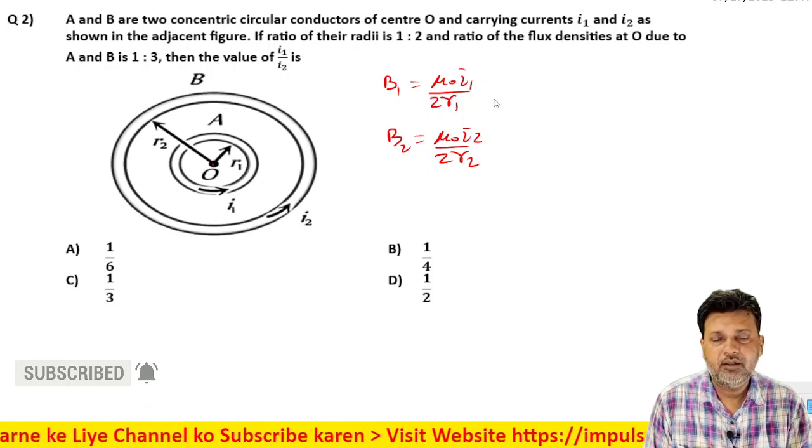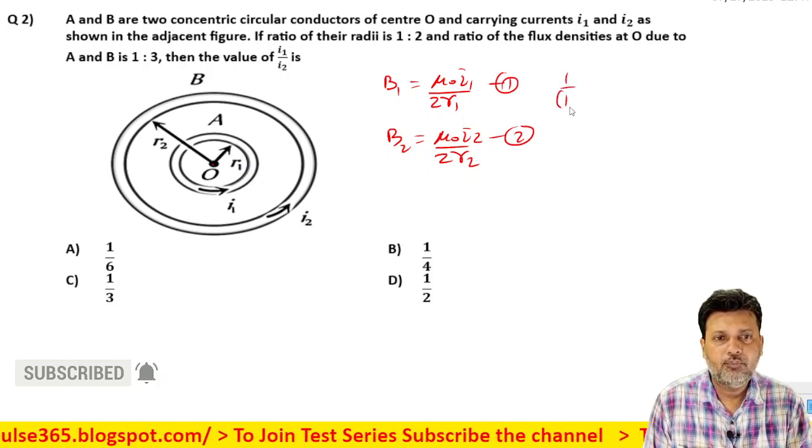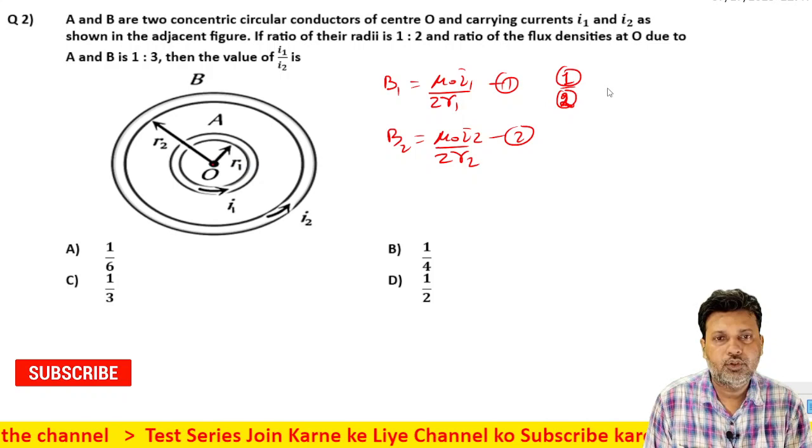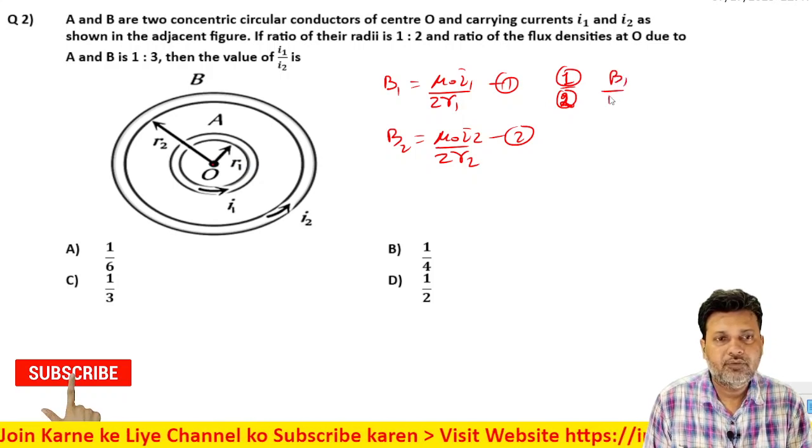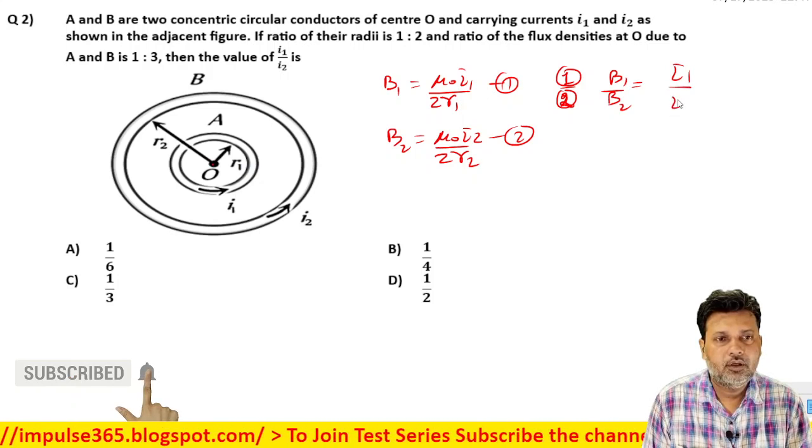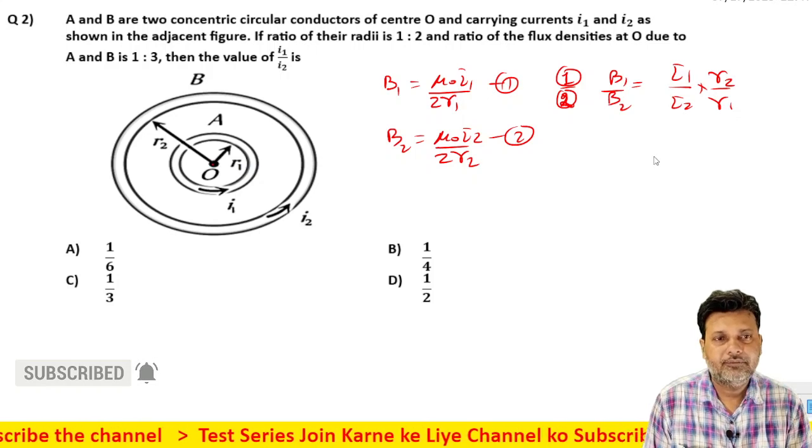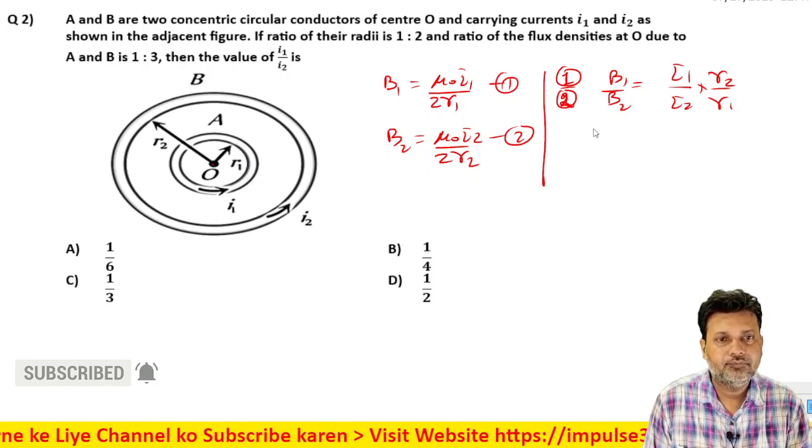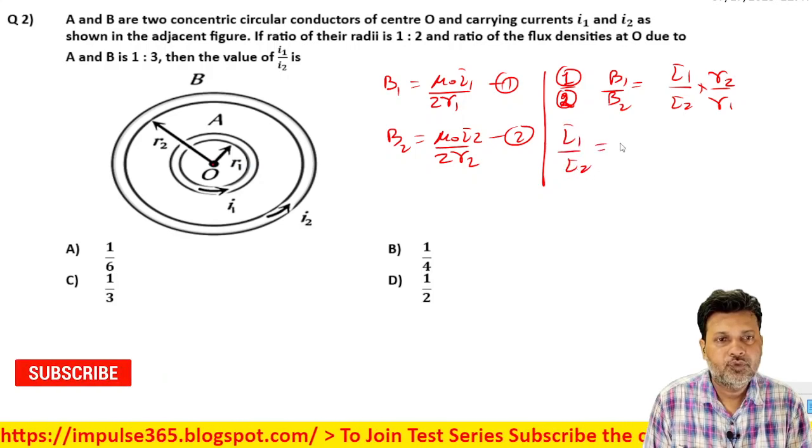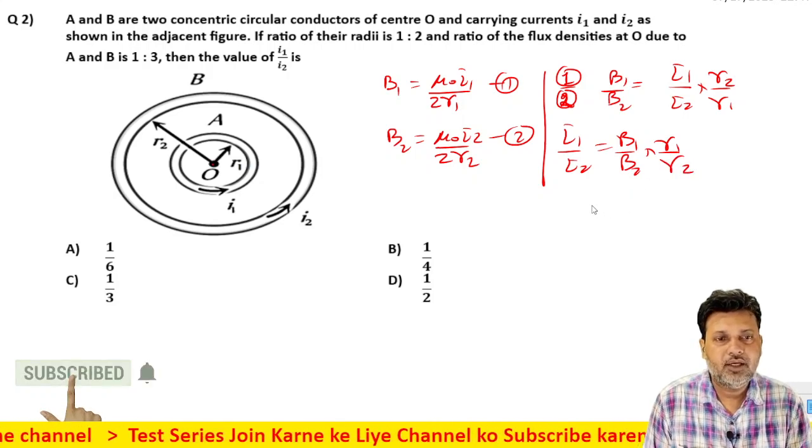To agar main divide kar du - first equation ise kah du, second equation ise kar du. One upon two. Equation one upon equation two kar du, to kya aayega? B1 upon B2 is equal to i1 upon i2 into r2 upon r1 aayega. Isko aap aise bhi le sakte ho: i1 upon i2 is equal to B1 upon B2 into r1 upon r2. Jo ho jayega.